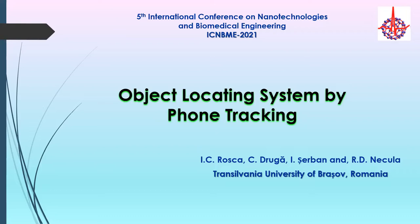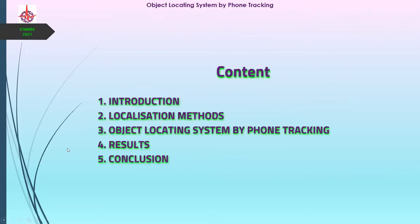Systems for tracking moving objects became functional in 1965 for the first time with a system called Transit. It was used by the American army until 1996, when it was replaced by GPS. After that, many solutions were built and used in this domain.